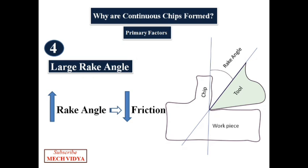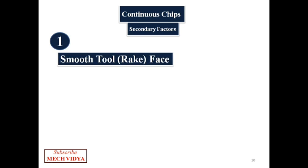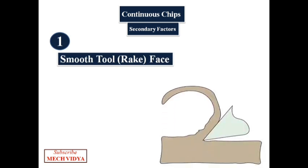Now let us discuss a few secondary factors responsible for continuous chip formation. First is smooth rake face. The rake face is the face of the tool which gets wrapped with the outgoing chip. If we have a tool with a very polished rake face, it will offer less resistance to the movement of the chip over it. This ensures the chip flows continuously without sticking or tearing apart.